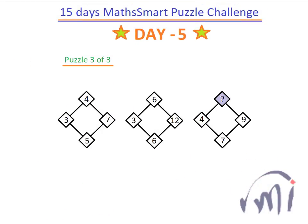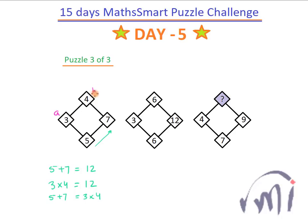This is the third and last puzzle, and we need to find the logic here. If I add 5 and 7, 5 plus 7 equals 12, and this is equal to 3 multiplied by 4. So a multiplied by b is equal to c plus d. Let's verify: if I add 6 and 12, I get 18, and 6 multiplied by 3 is also equal to 18. The logic holds.